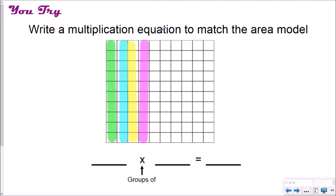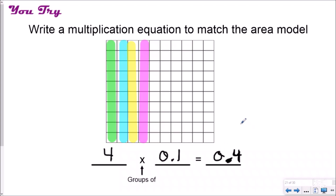Let's do one more. For this one, we're actually going to work backwards because sometimes on a test it might ask you to write the equation that goes with the area model. We're choosing to think about our multiplication sign as groups of. I know that I have four different groups here, so my first number is going to be four. Each group is one-tenth, or ten-hundredths — same thing. So I have four groups of one-tenth, and my exact answer is four-tenths. Sometimes you actually have to write the multiplication equation that the area model shows. Four equal groups of one-tenth — when multiplied together, the product is four-tenths. So four groups of one-tenth equals four-tenths.